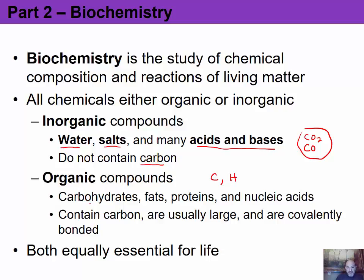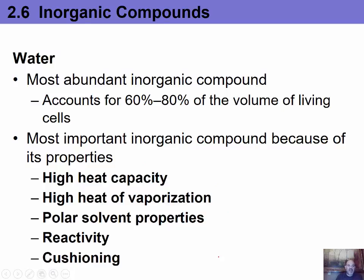Some major organic compounds found in living things include carbohydrates, fats, proteins, and nucleic acids. They are usually large and are covalently bonded — they share electrons between atoms — rather than forming ionic bonds. Both inorganic and organic compounds are essential for life.